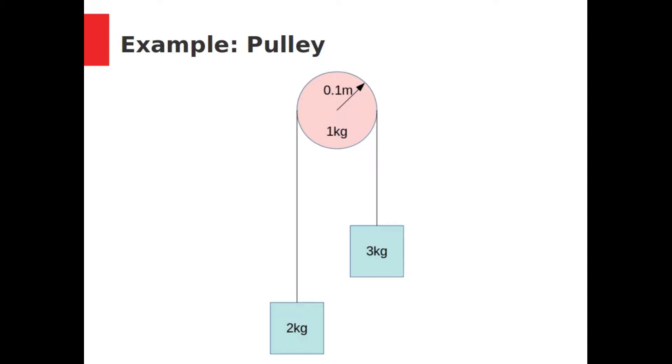Here, a 2 kg block and a 3 kg block are strung over a pulley. The wheel has a mass of 1 kg and a radius of 0.1 meters. What is the acceleration of the system?